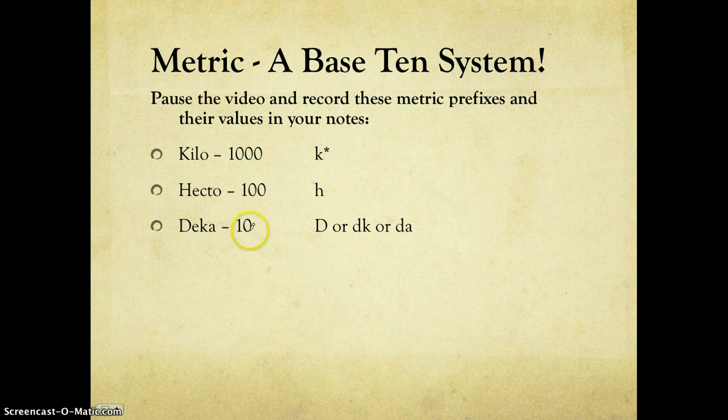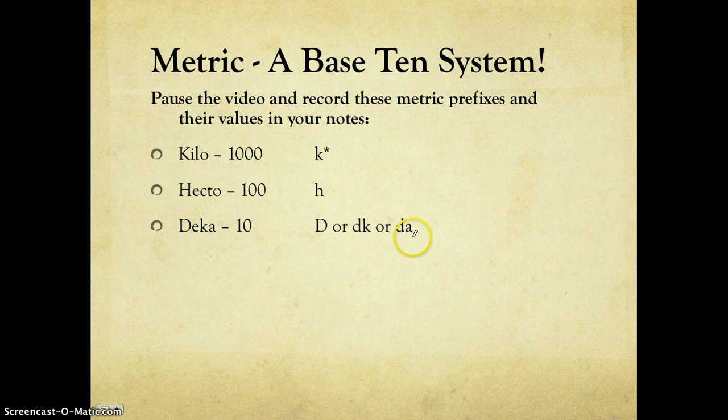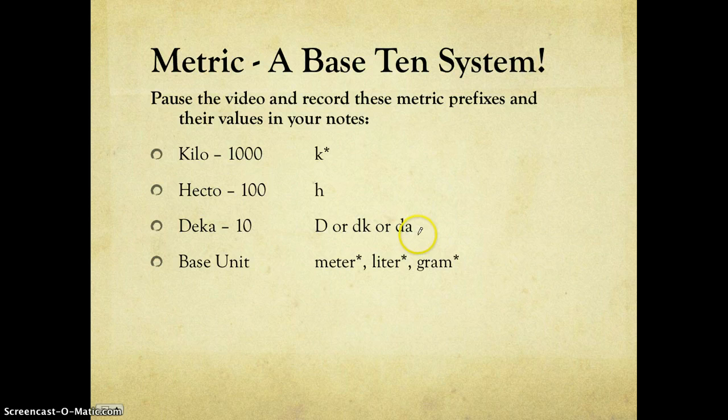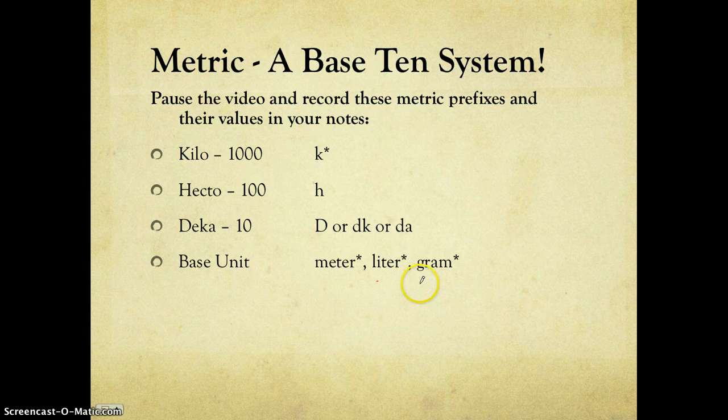Deca, 10 times the base unit. And this is kind of interesting here. Sometimes a capital D is used. You can also see a DK occasionally or a lowercase dA. We don't use Deca a whole lot in chemistry, so I really don't care what you use, but you should be able to recognize all of those. The base units that we're concerned with right now are the meter, liter, and gram. The meter is for length, the liter for volume, and gram is for mass.